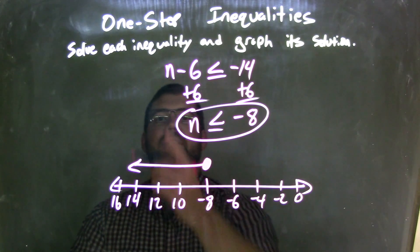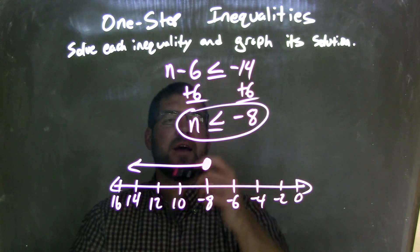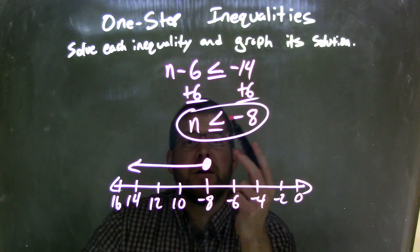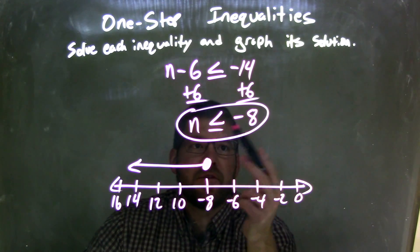So let's recap here. We have n minus 6 is less than or equal to negative 14. I added 6 to both sides. That gave me n by itself here. So I have n is less than or equal to negative 8.